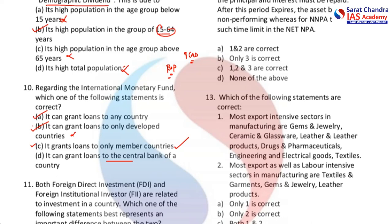Next question: both FDI and FII are related to investment in a country. Which of the following statements best represents an important difference between the two? FII is always considered hot money, while FDI is more of a long-term investment — someone coming into the pharma sector or software sector, buying a stake in a company and trying to develop it further.